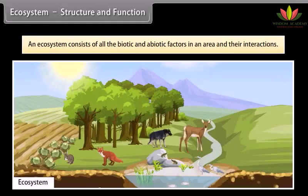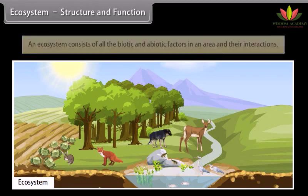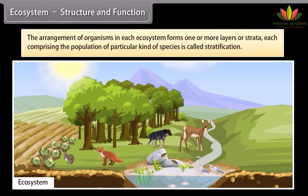An ecosystem consists of all the biotic and abiotic factors in an area. The arrangement of organisms in each ecosystem forms one or more layers or strata, each comprising the population of a particular kind of species, which is called stratification.